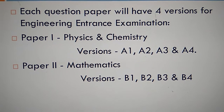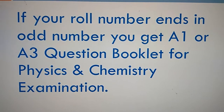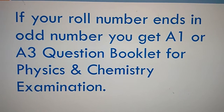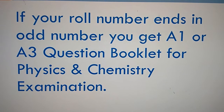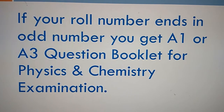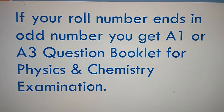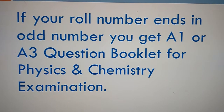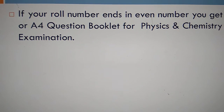If your roll number ends in an odd number — that is 1, 3, 5, 7, 9, etc. — you will get the A1 or A3 question booklet for the Physics and Chemistry examination.